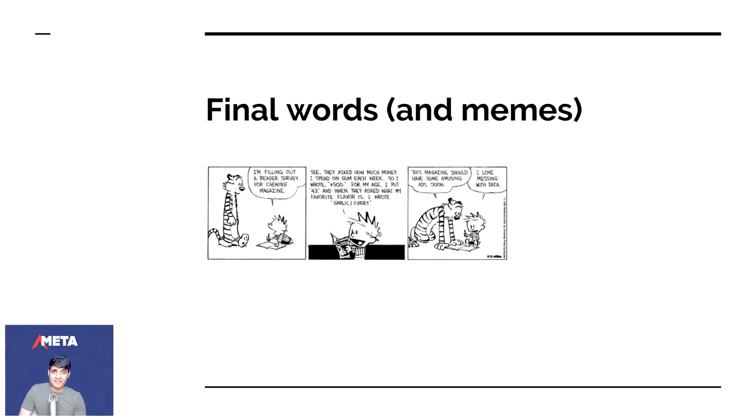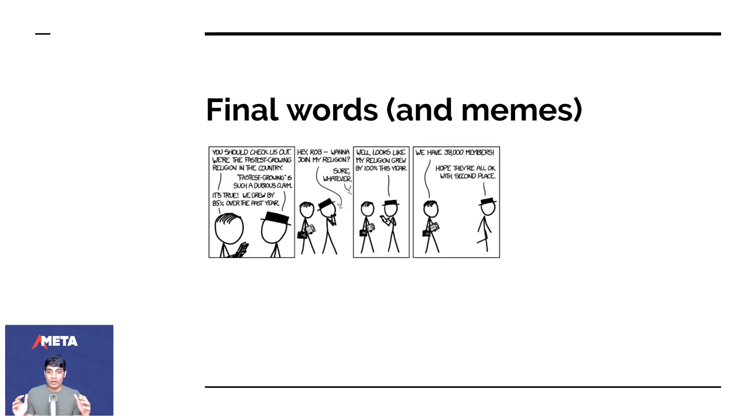Sometimes when you're filling out a reader survey for some magazine, somebody asks how much money you spend on gum each week, and a person writes in $500. For age, they put 43, and for favorite flavor, they write garlic/curry. When you ask for data in an anonymized fashion on the internet or through mail, people can put in rubbish. Rubbish data, especially with statistics, is outlier data. You need a way to clean out that data or recognize that this person was obviously trolling. Especially online, there are a lot of people trolling that completely skew the results. People mess with data, and you have to be very careful about who you let in.